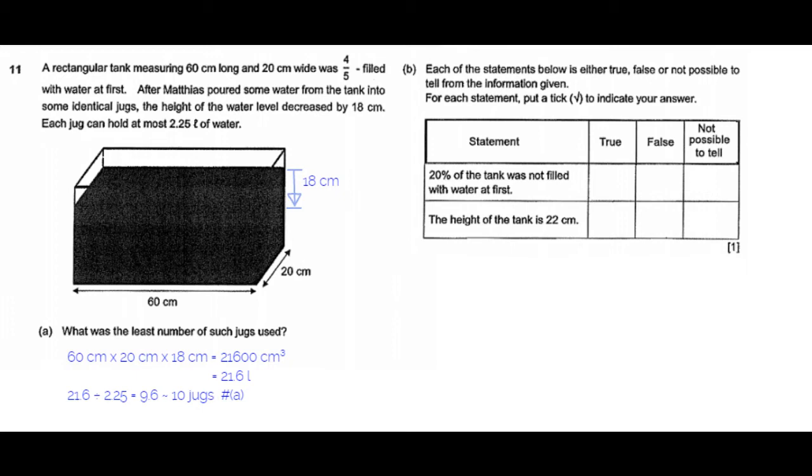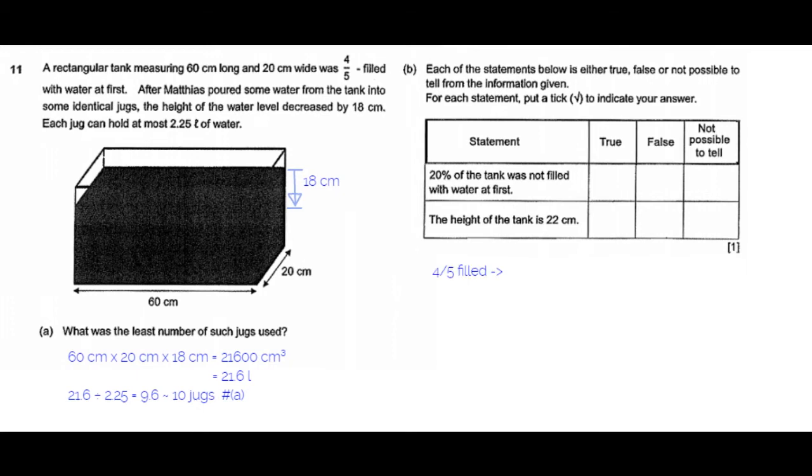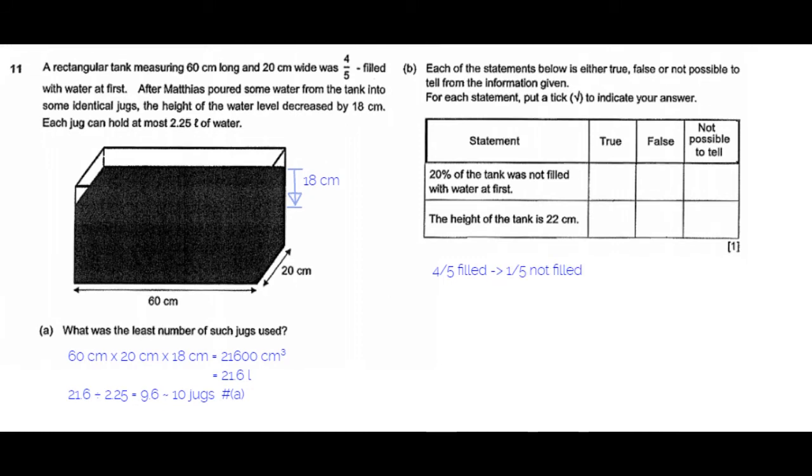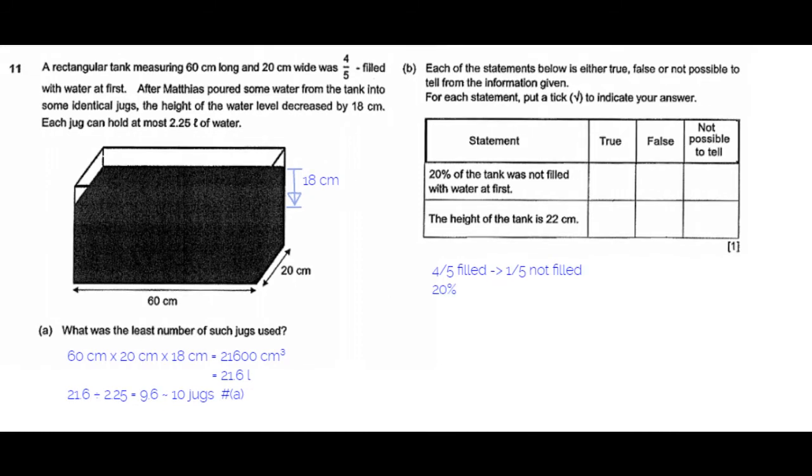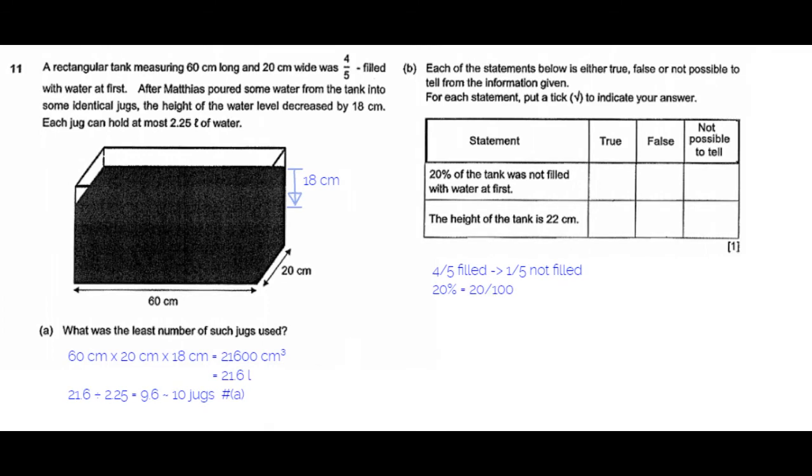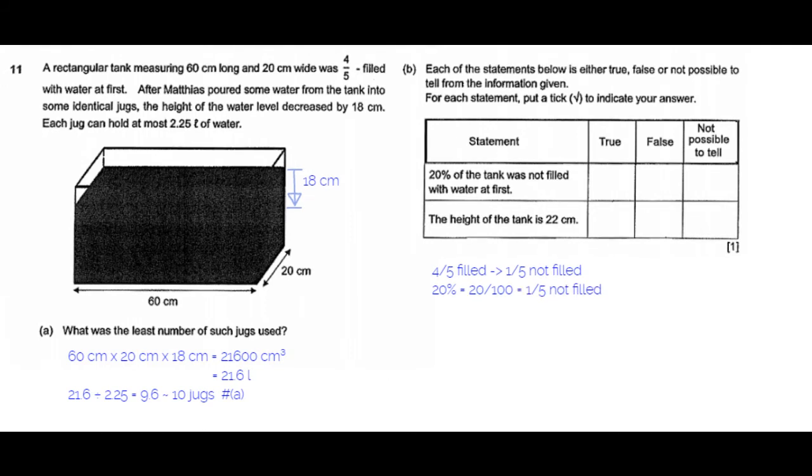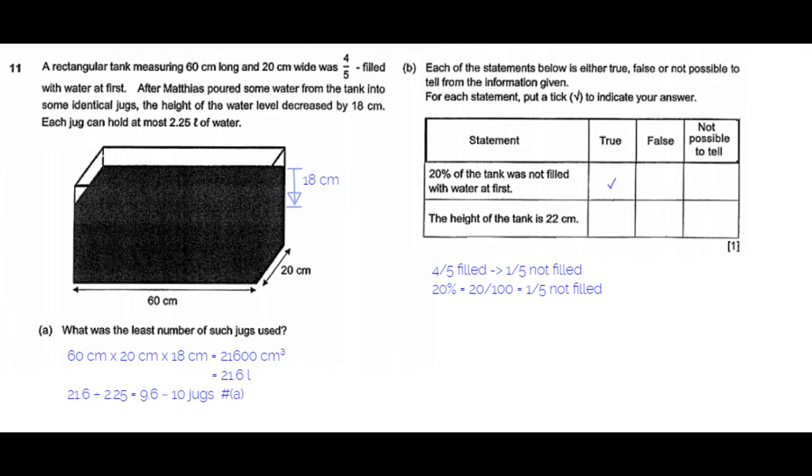The first statement is 20% of the tank was not filled with water at first. It is given that initially it was four-fifths filled, which means one-fifth was not filled. The statement claims 20% of the tank was not filled. 20% corresponds to 20 over 100, which is equal to one-fifth being not filled. So yes, that is true.